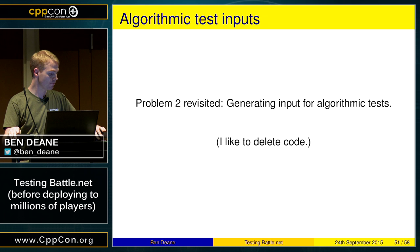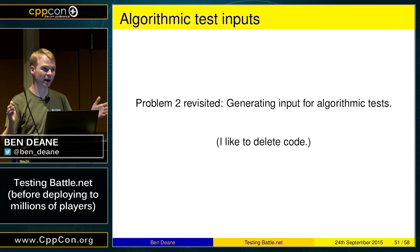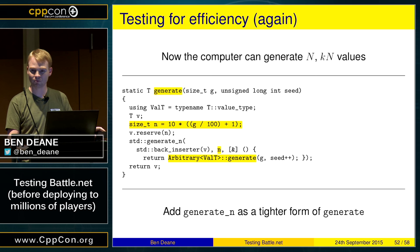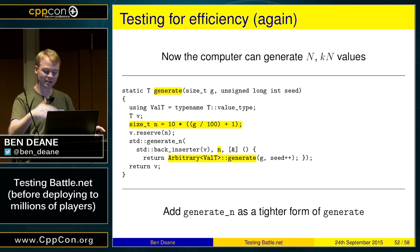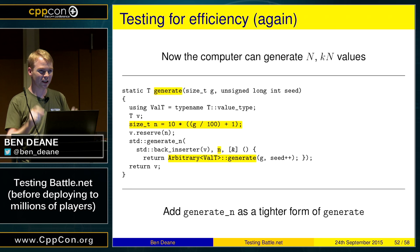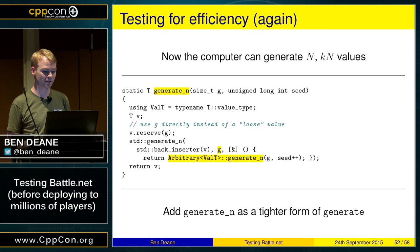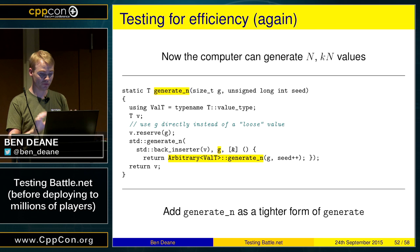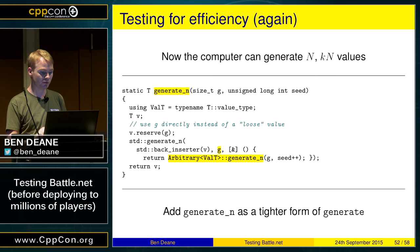Now that we can generate all these things, let's go back to the algorithmic test. I have all these 80-to-100-line tests I just want to delete. There's one small thing to take care of: generate has a fuzzy idea of the thing it generates using the generation parameter. I need a tighter form of generate — I'll call it generate_n. Instead of the fuzzy idea of a generation, I use the actual value passed in directly. When running algorithmic tests, it's important I know the exact size of the input.